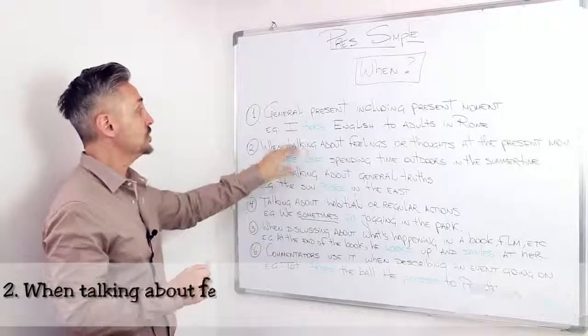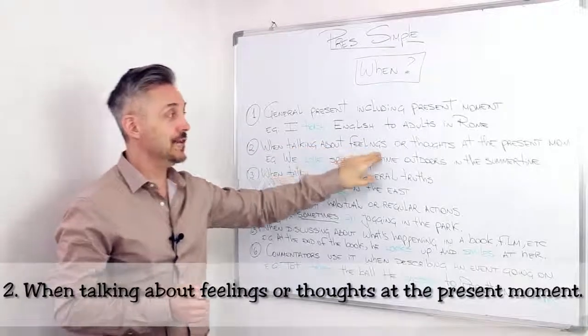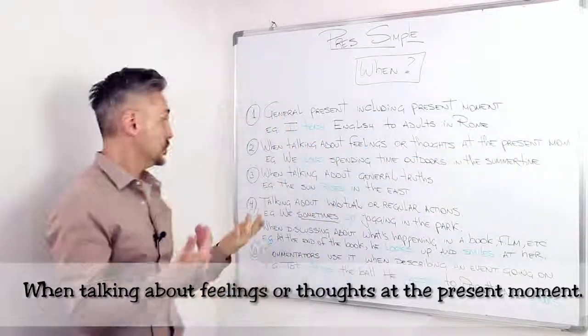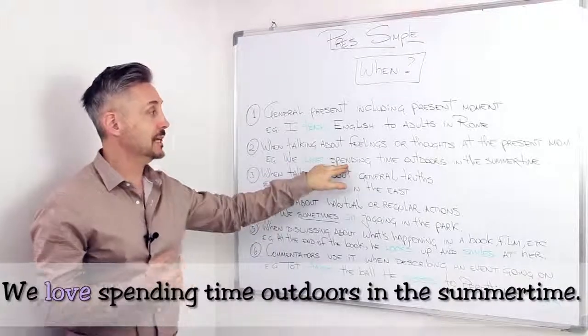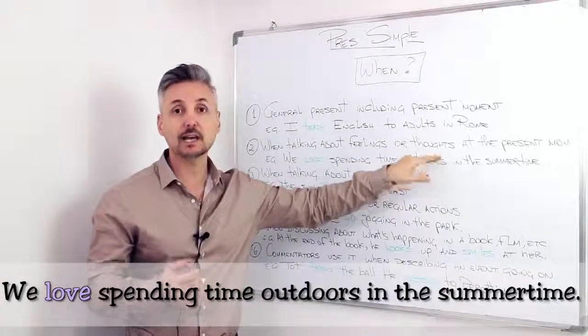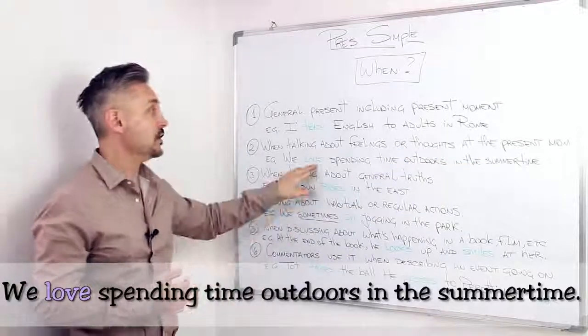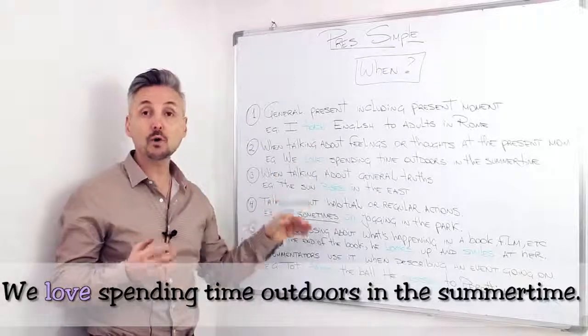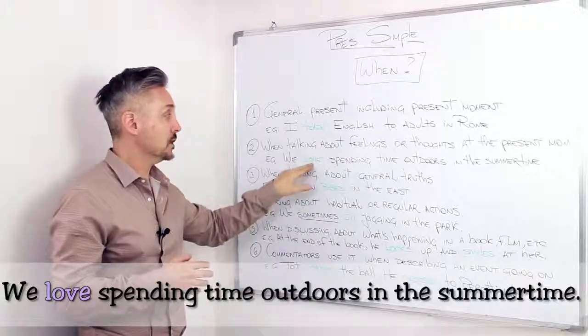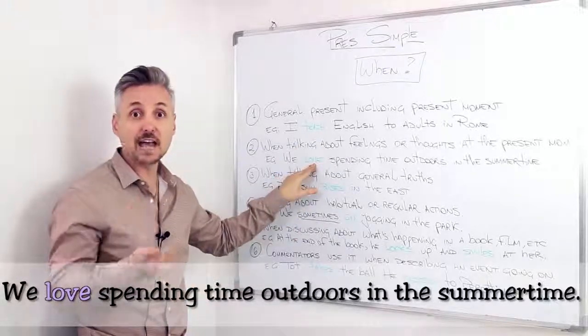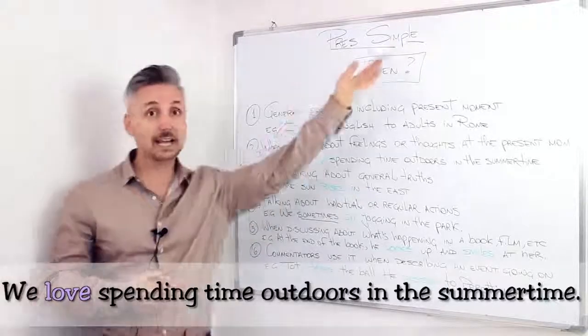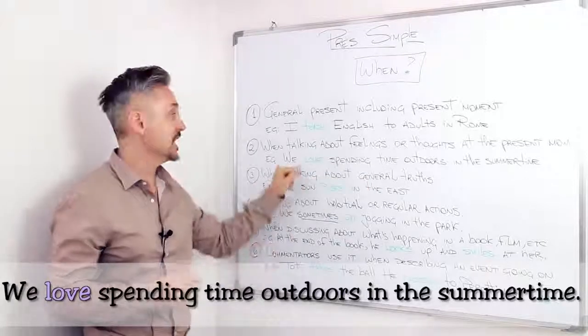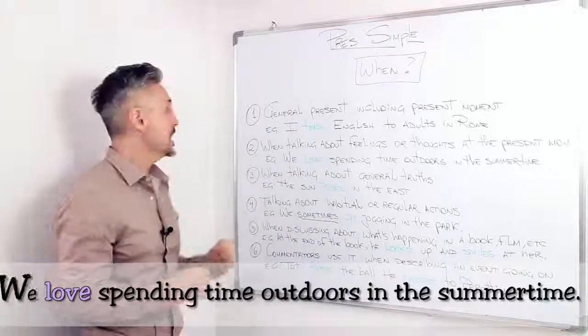Then, the second situation, when talking about feelings or thoughts at the present moment. So, we love spending time outdoors in the summertime. Here, the verb of feeling is love. Now, if you want to watch a lesson of verbs of feeling, such as love, like, enjoy, hate, you can click here. Remember, that we need the ing, love spending.